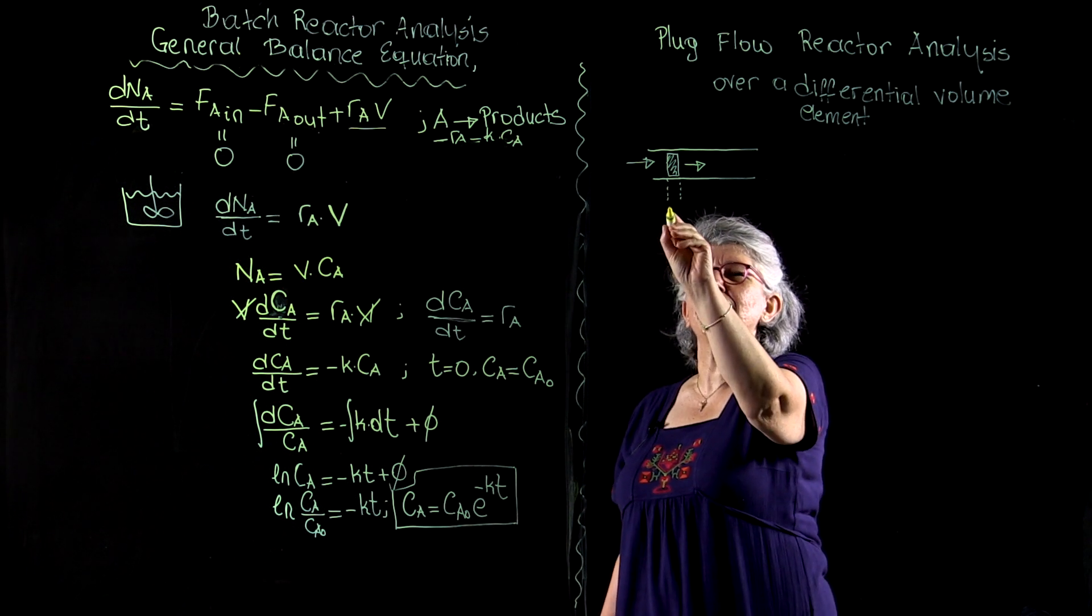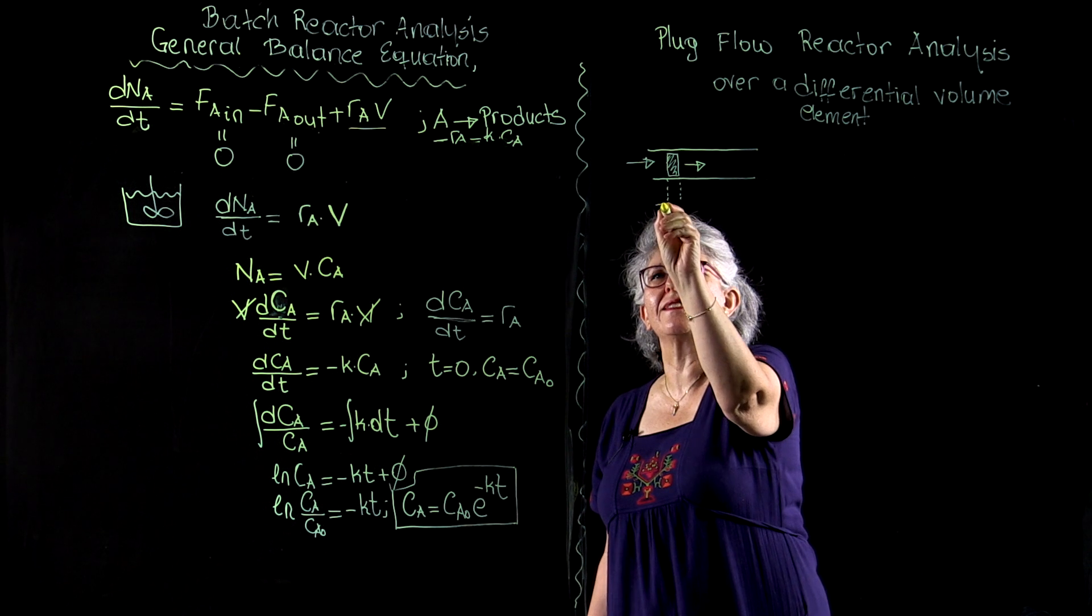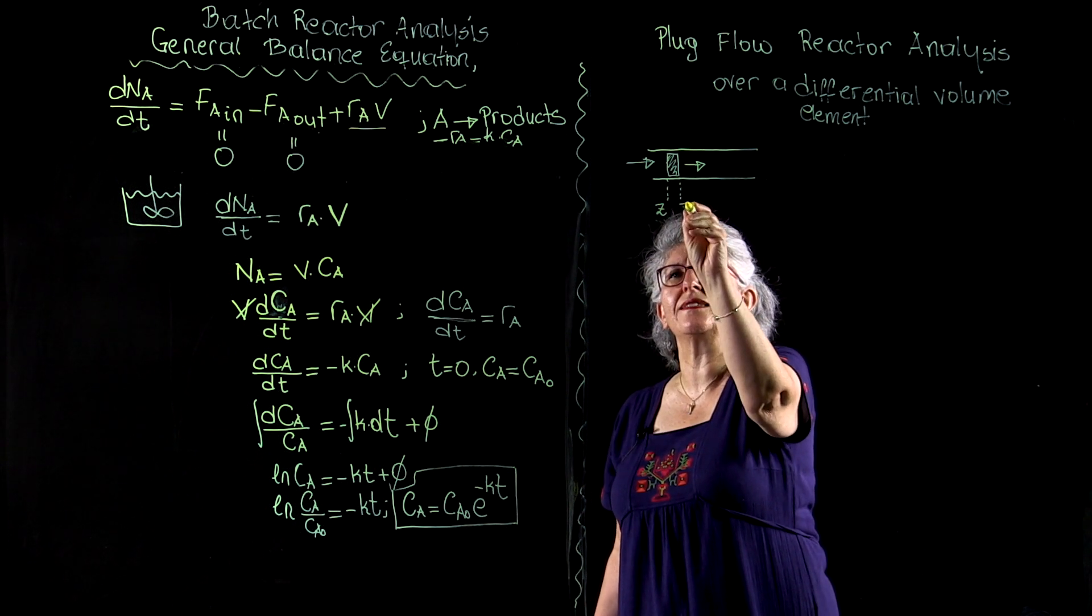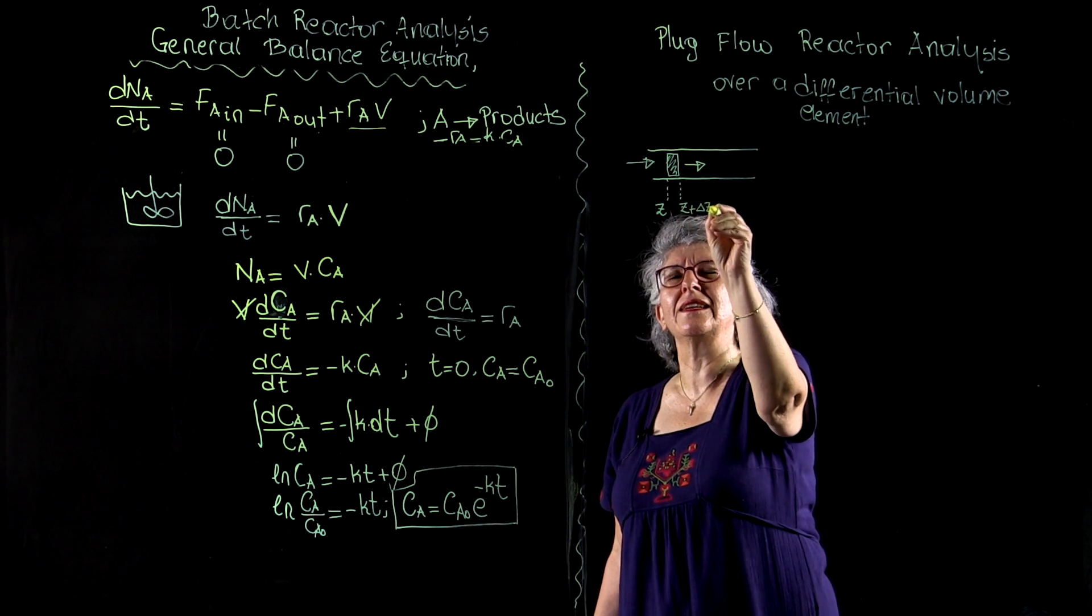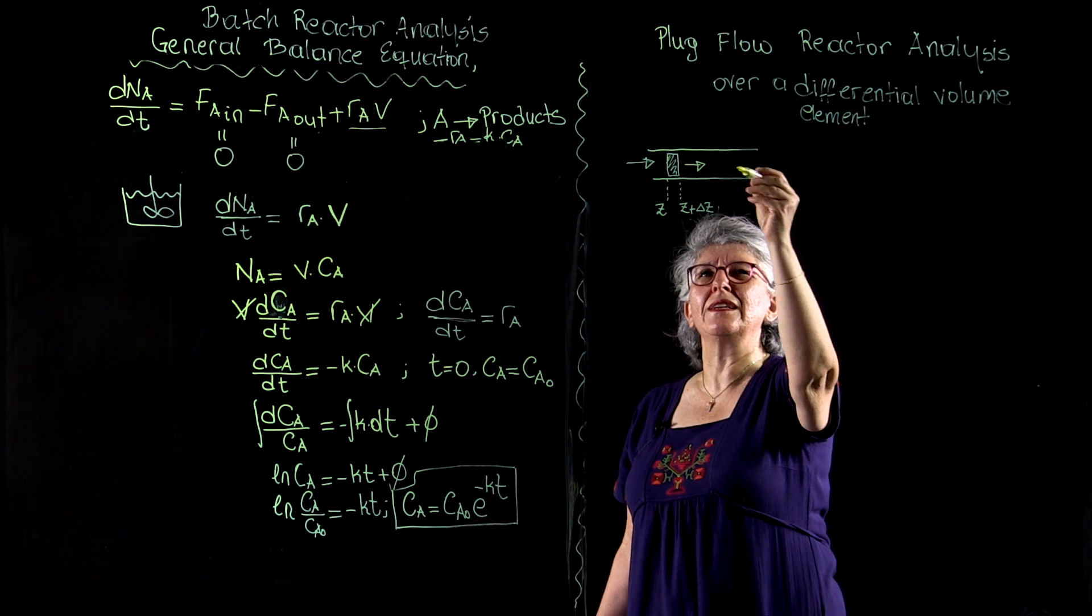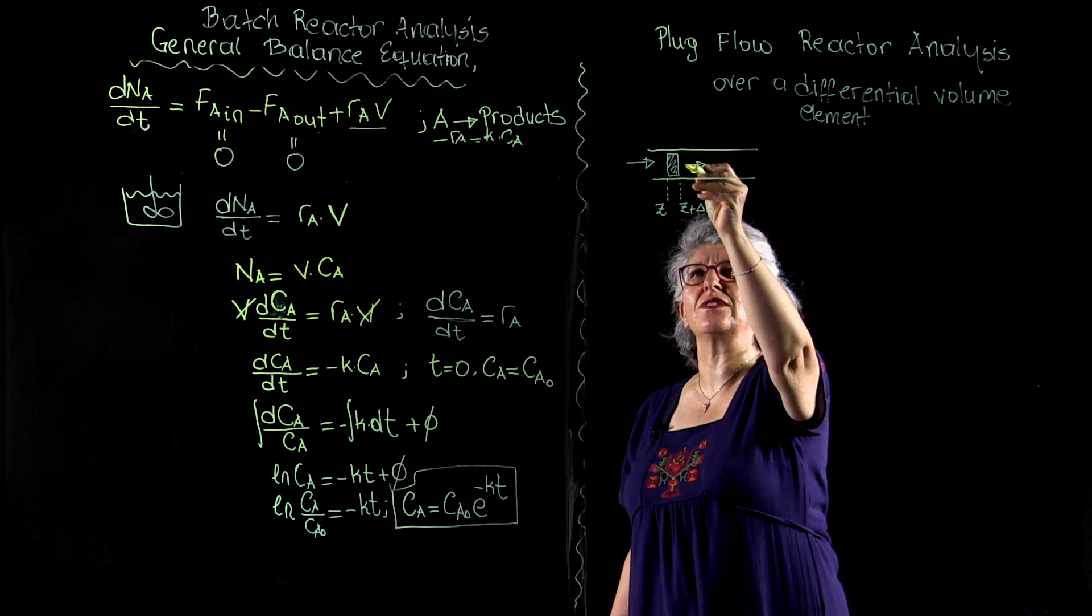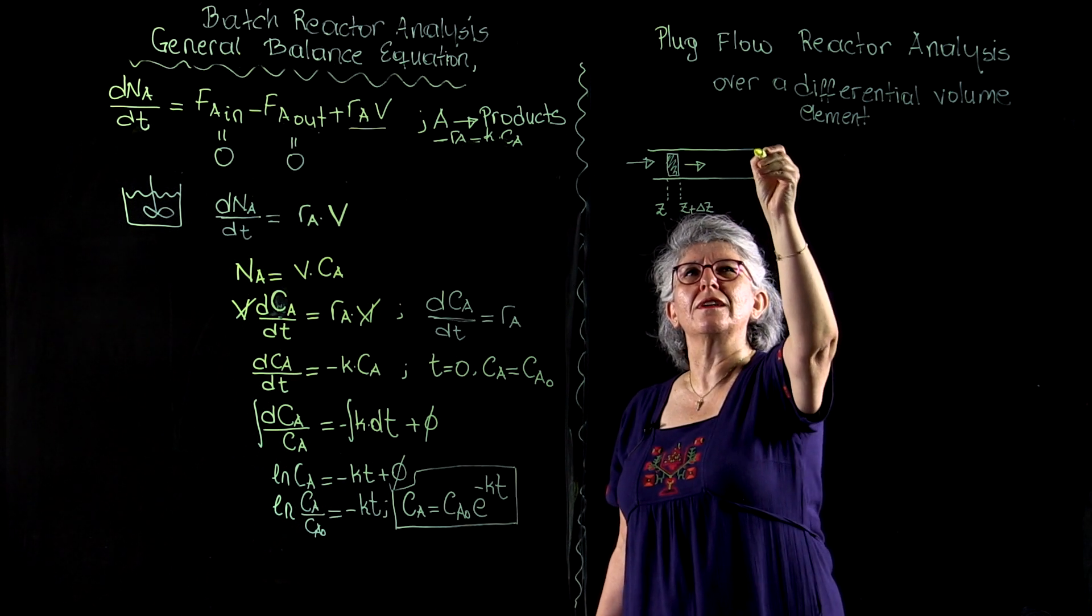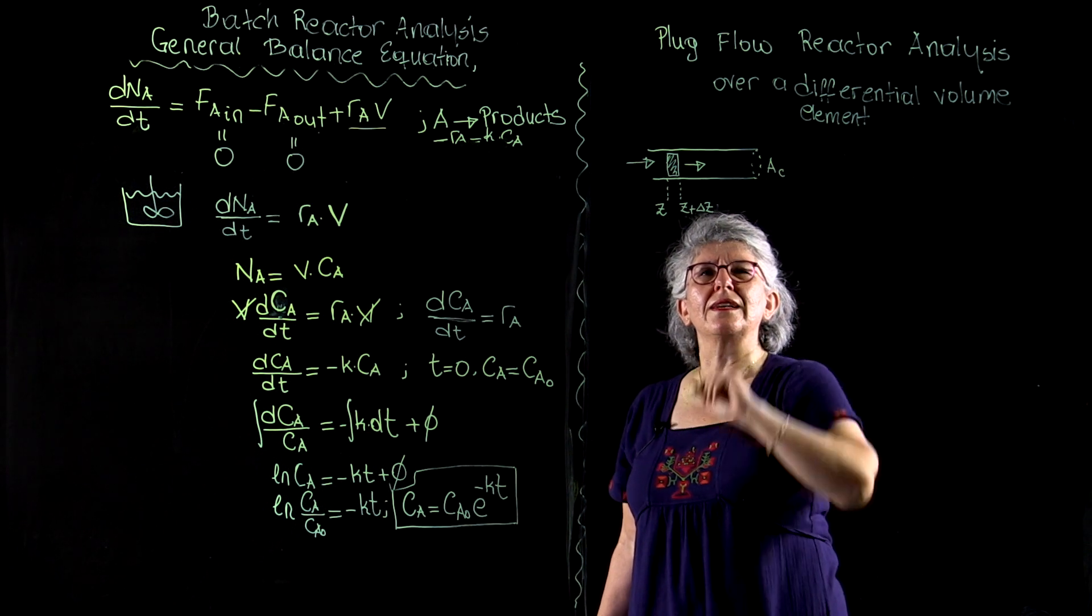So here I'm going to define a volume element which is going to start at Z and it is going to end at Z plus Delta Z. This is going to be a cylindrical geometry with cross sectional area a_C.